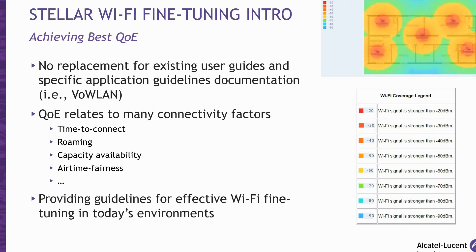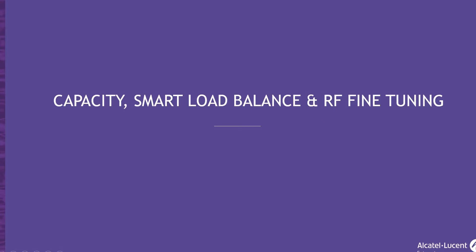Through this session, I will provide guidelines for fine-tuning the Wi-Fi network by understanding the Stellar wireless configurable parameters — for example, capacity and airtime fairness related parameters — especially when mixing legacy and newer Wi-Fi devices in the same network. In this section, I will be addressing the capacity, the smart load balancing, and RF fine-tuning parameters for Stellar wireless.